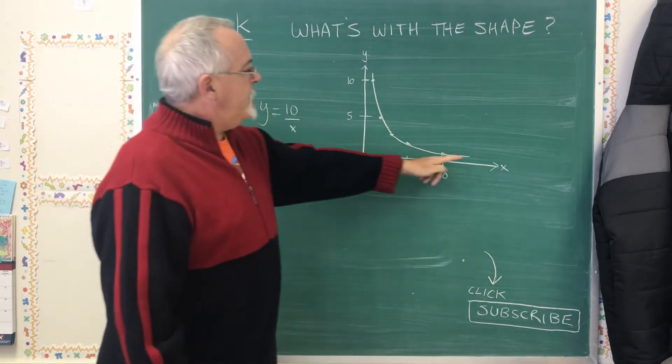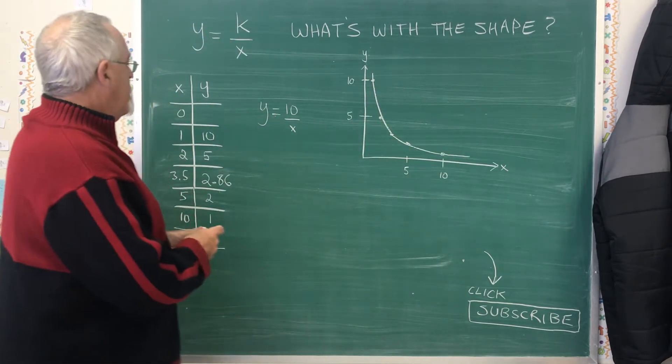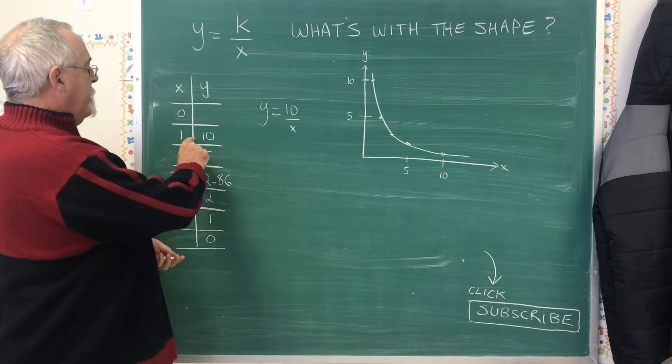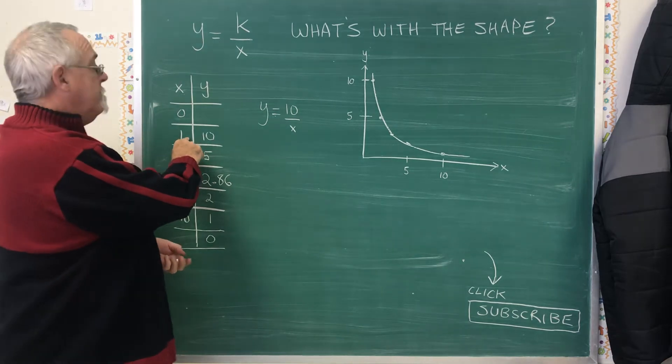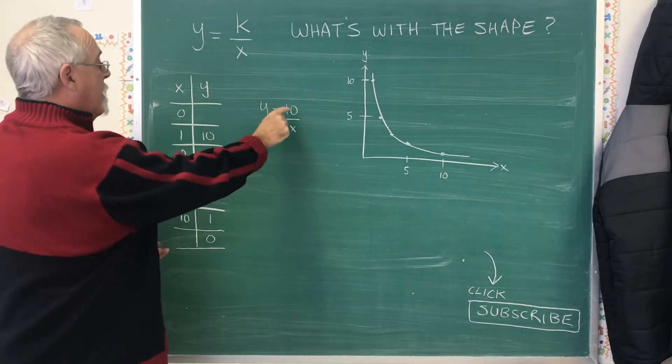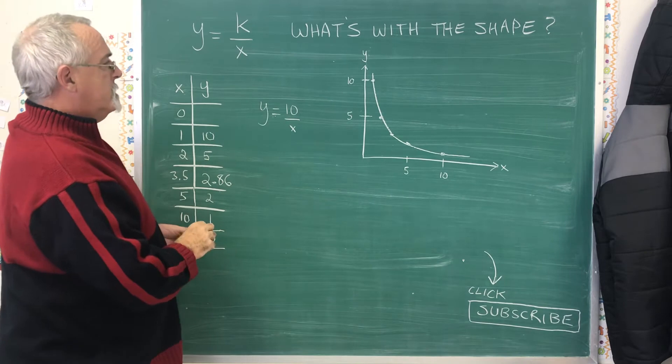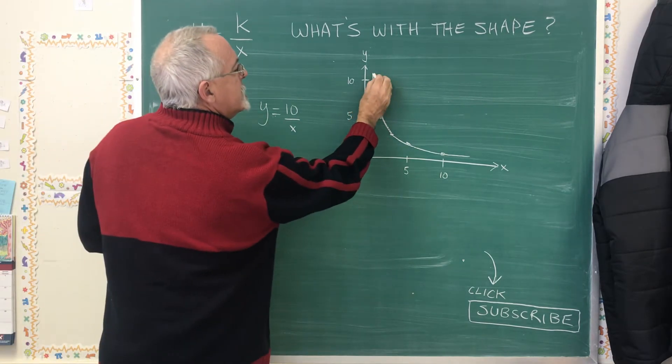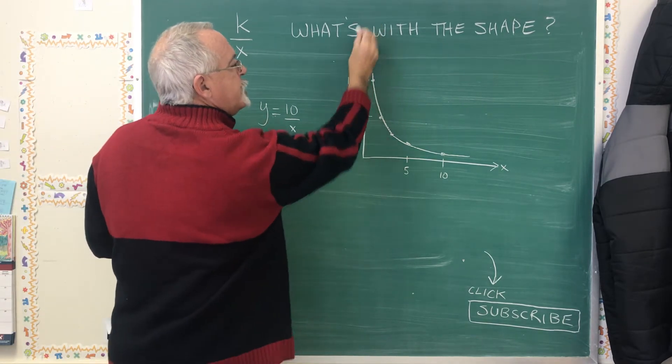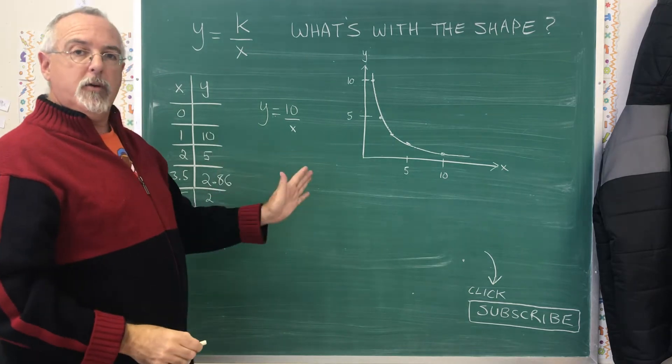And what's happening at both ends of the curve is interesting, because if I choose numbers smaller than 1 but greater than 0, I'm going to get bigger and bigger answers. And what that means is this curve is going to keep on approaching the y-axis, but it's never going to touch it.